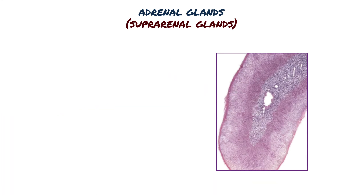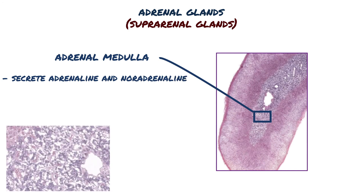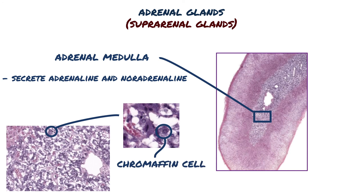The adrenal medulla is the central part of the adrenal gland, surrounded by the cortex. The medulla plays a very important role in homeostasis, serving to secrete adrenaline and noradrenaline. The main secreting cells of the adrenal medulla are called chromaffin cells, which are neuroendocrine cells that are modified sympathetic ganglia.